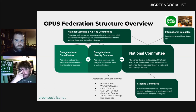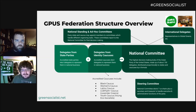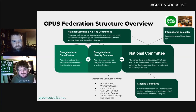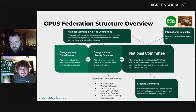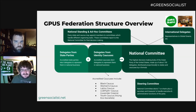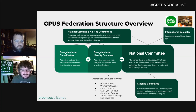Here's a quick diagram of our national structure. You can see on the left we have delegates from state parties, and there's a plus sign, and then there's delegates from identity caucuses. So our federation is made up of two members: the state parties, but we also recognize a couple of caucuses. The idea of the caucuses is to make sure that historically underrepresented voices are actually represented and heard more in our party.